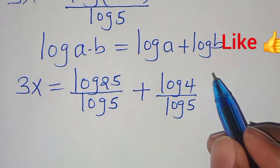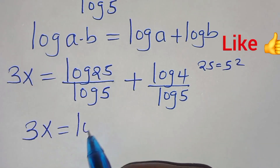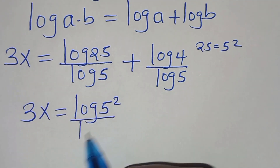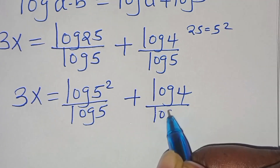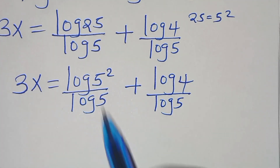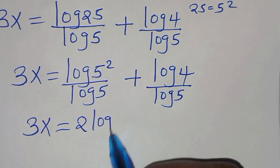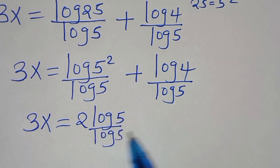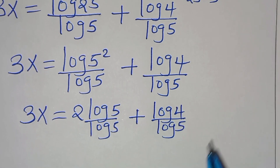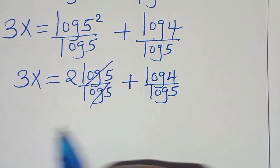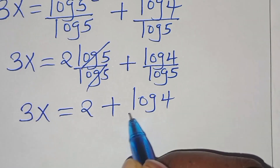We can express 25 as 5 to the power of 2. So this implies 3x equals log(5²) divided by log 5, plus log 4 divided by log 5. Applying the power property, this becomes 2·log 5 divided by log 5, plus log 4 divided by log 5. Simplifying log 5 and log 5, we get 3x equals 2 plus log 4 over log 5.